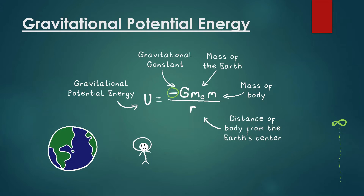We know that the force of gravity is equal to G times the mass of one object times the mass of the second object divided by how far they are squared. Since we're trying to find the gravitational potential energy, or the work done by gravity, this is also the same as multiplying by how far it goes — and we get rid of R. This is how we arrive at this formula. I did simplify this a little bit, so if you want to look at more of that, please do so. But let's go into doing problems like this.